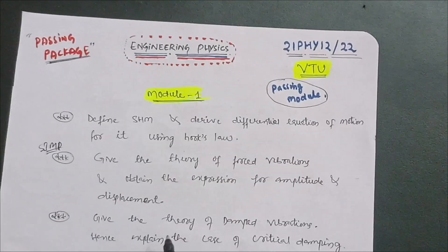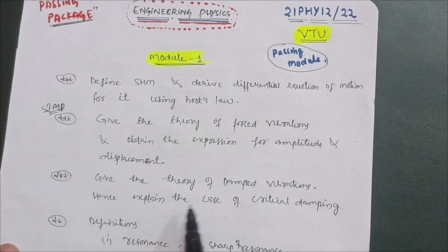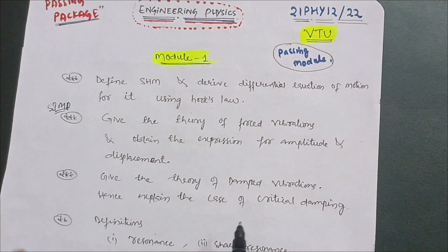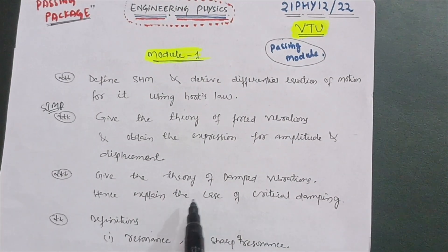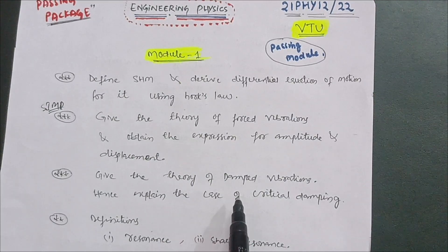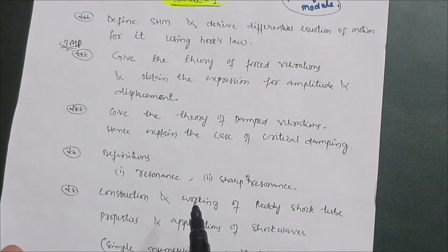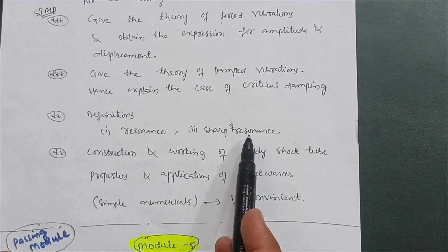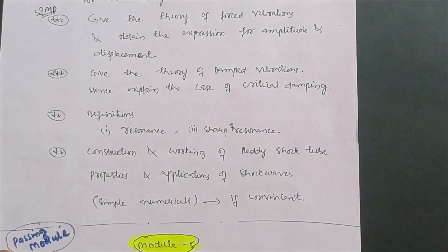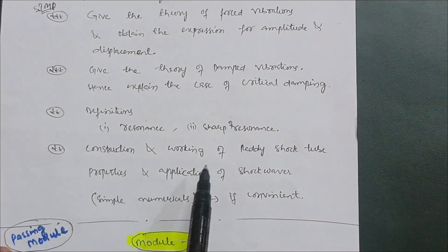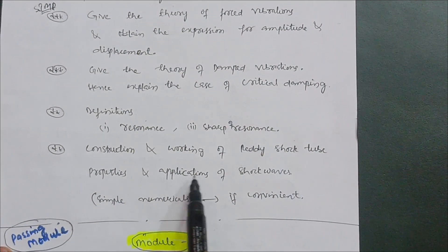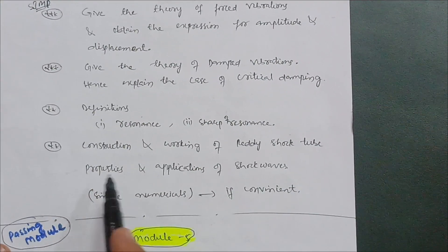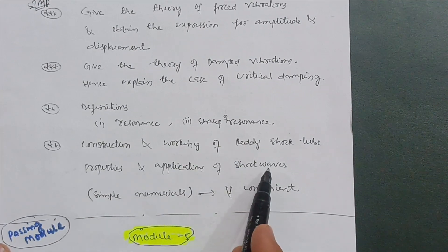Also important from Module 1: give the theory of damped vibrations and explain the case of critical damping. There is over-damping and under-damping as well, but focus on critical damping as questions come in that form. Additionally, cover the definitions of resonance and sharpness of resonance. Another most important question is the construction and working of the Reddy shock tube, and separately, the properties and applications of shock waves.